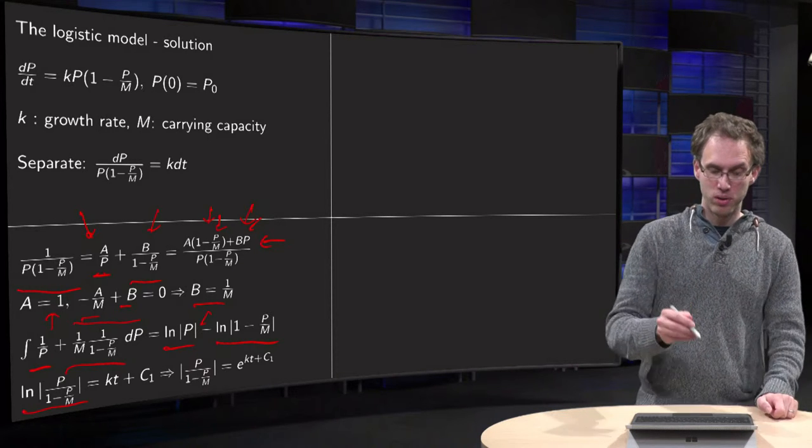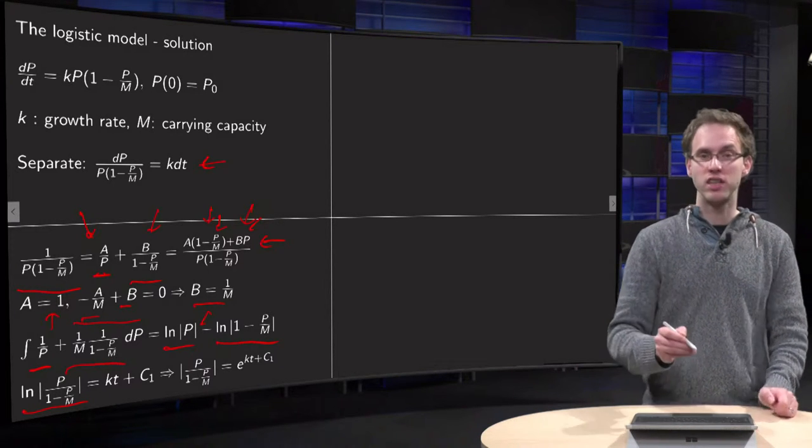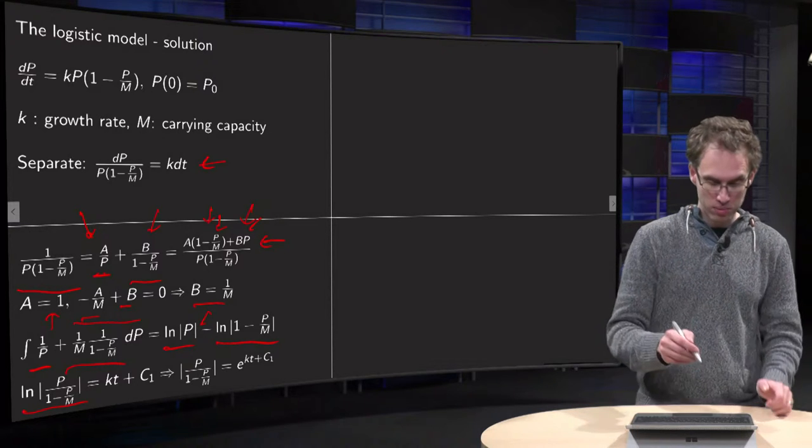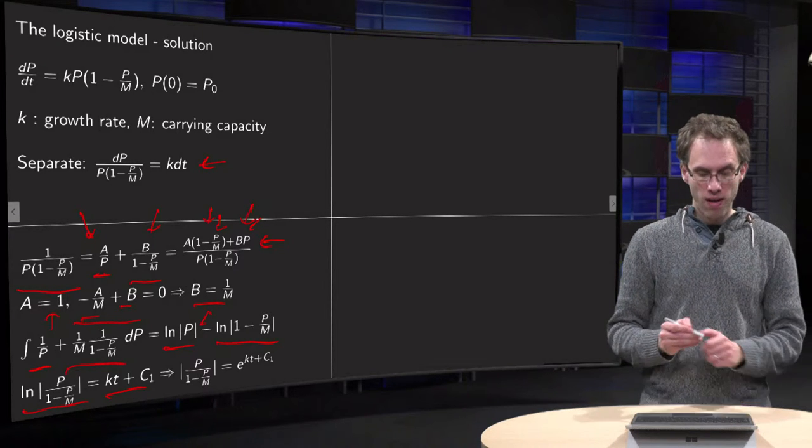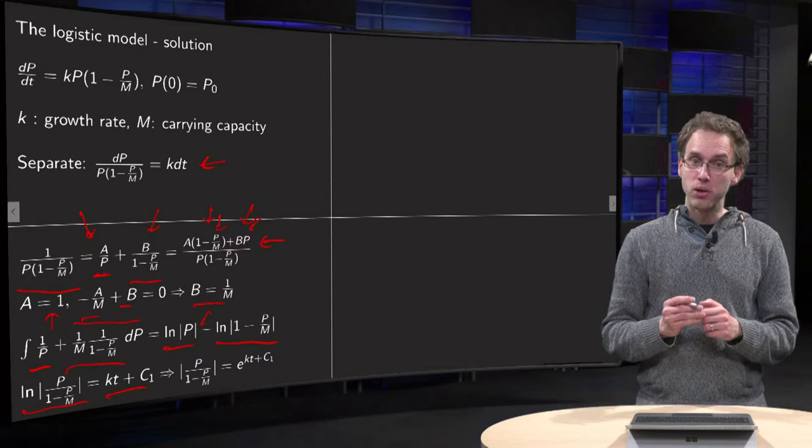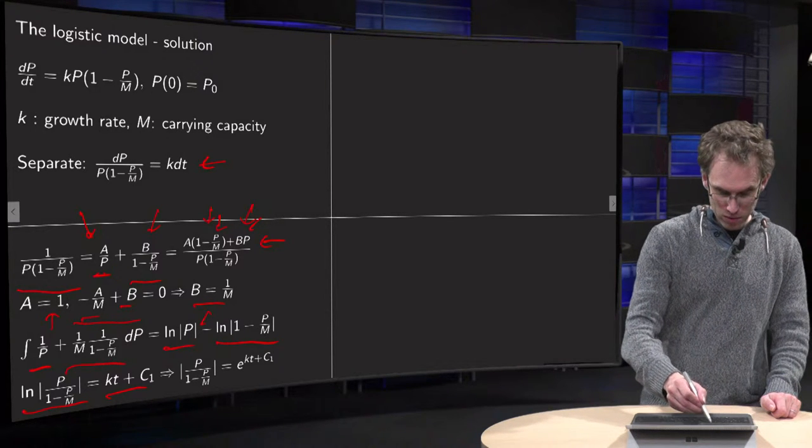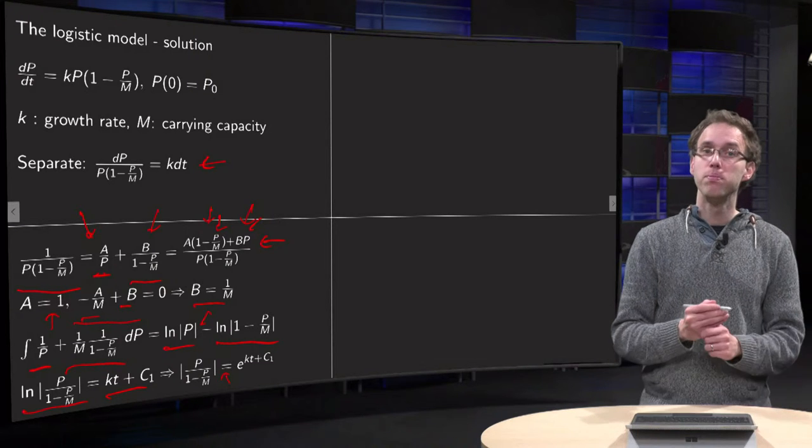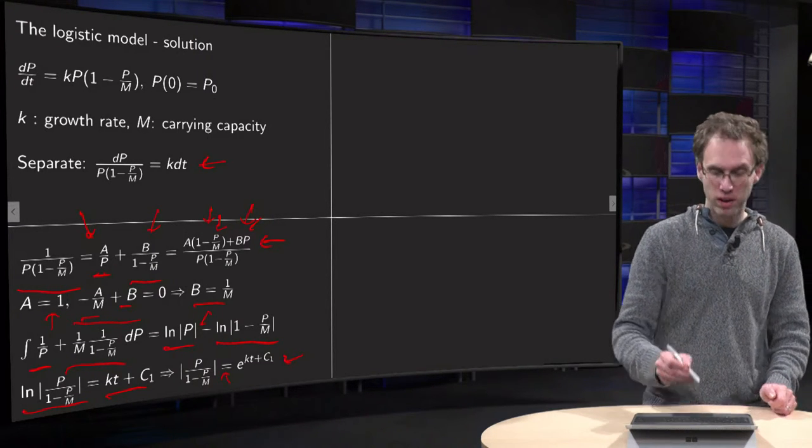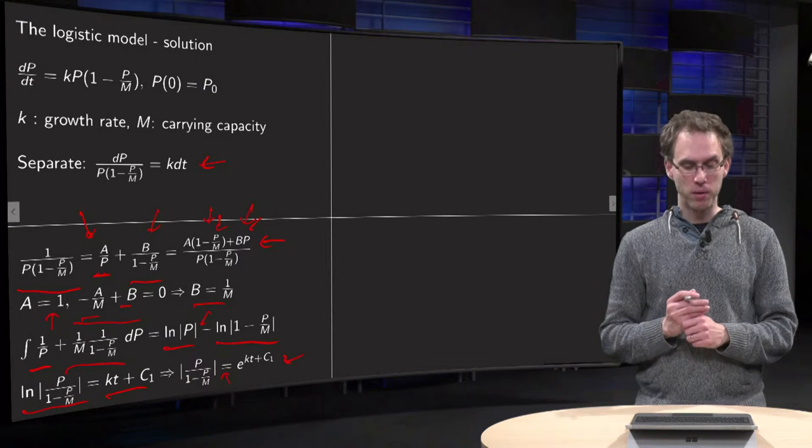And this integral equals the integral on the right hand side, while the integral on the right hand side is easy: it's just kt plus c1. So you can take exponentials on left and right, so you get the absolute value of P over (1 minus P over M) equals the exponential of kt plus c1.